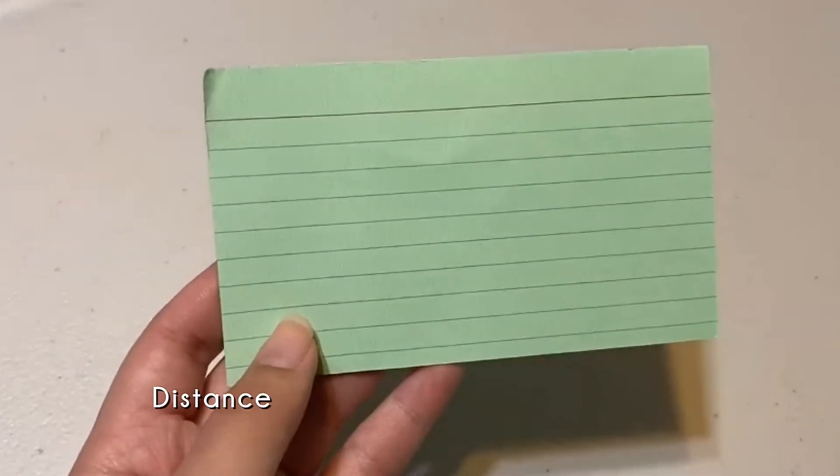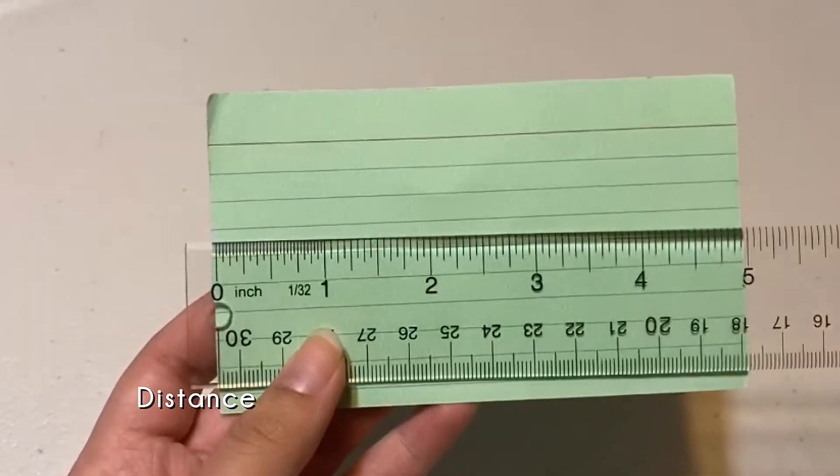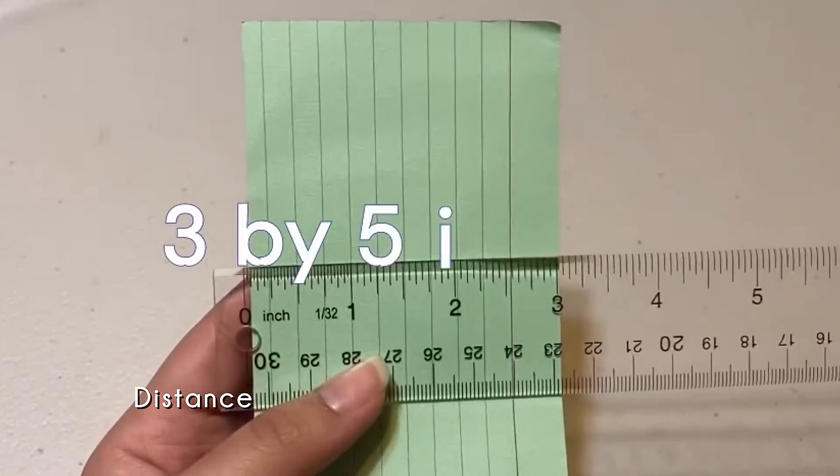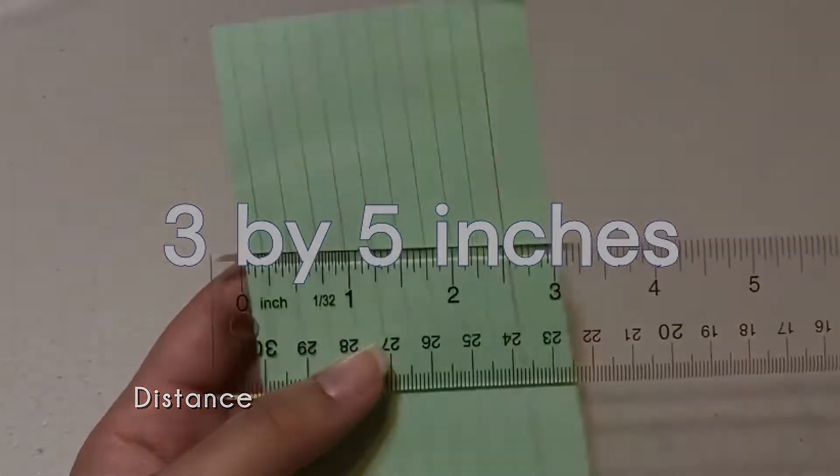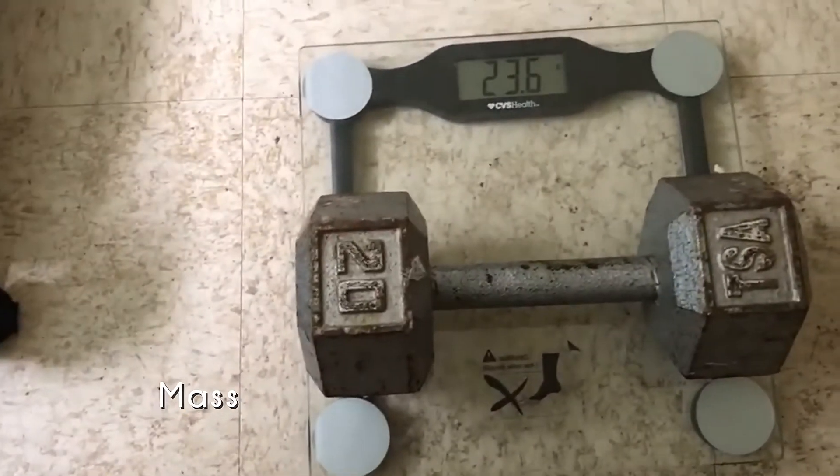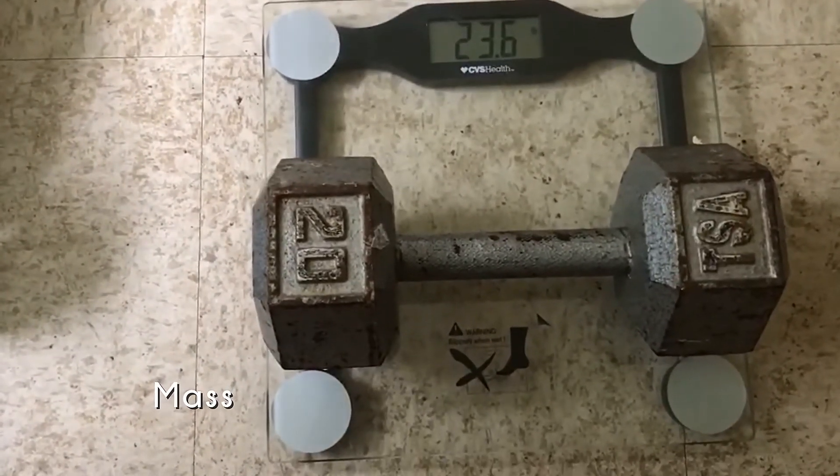This same note card is 7.6 by 12.7 centimeters but is also three by five inches. These weights represent or can be an example of weight and mass in the standard system.